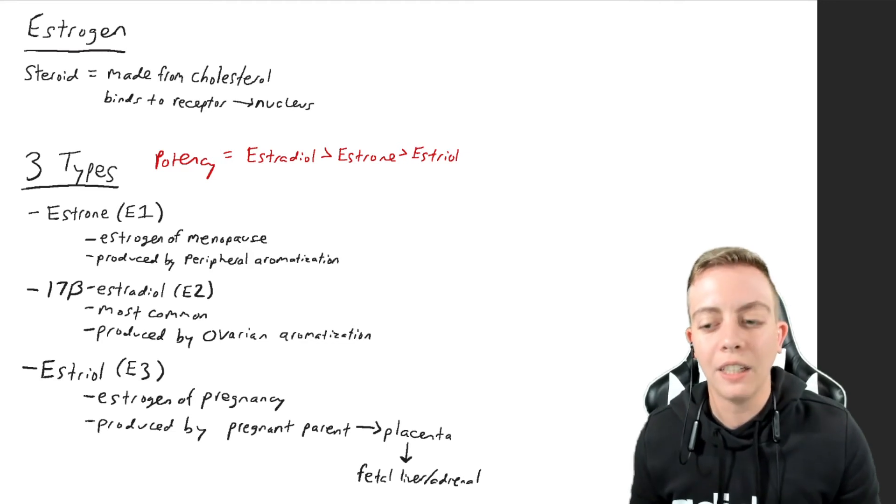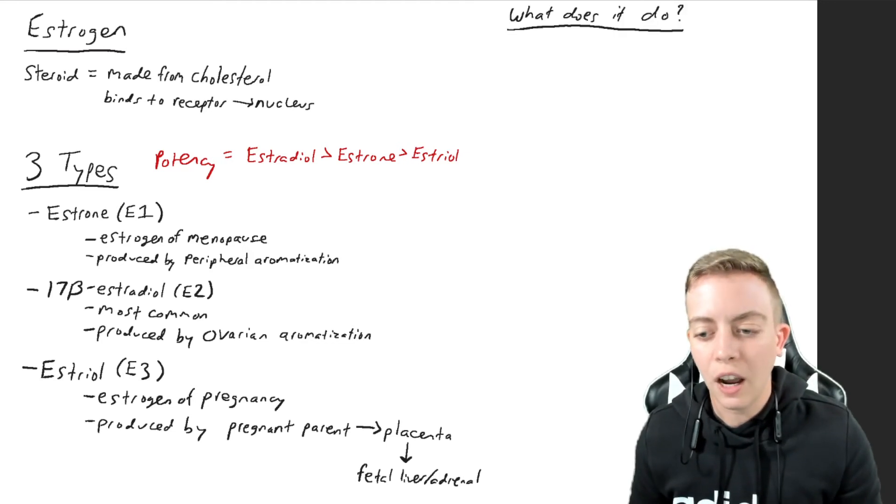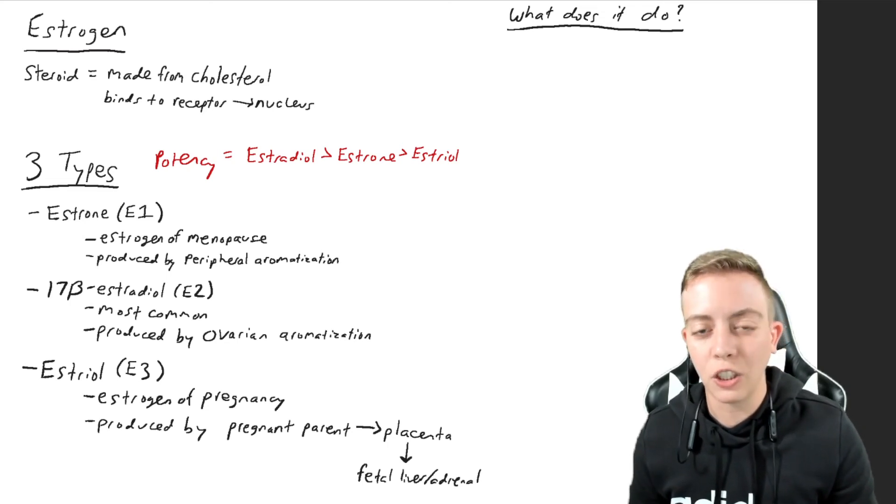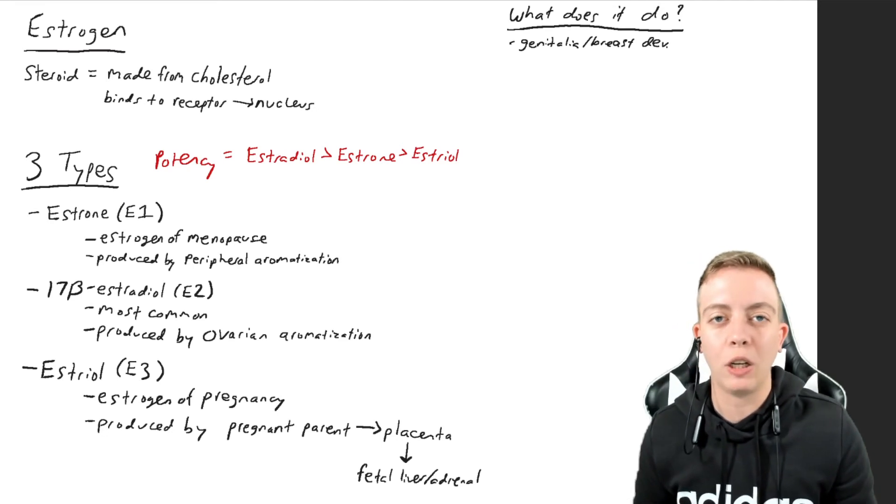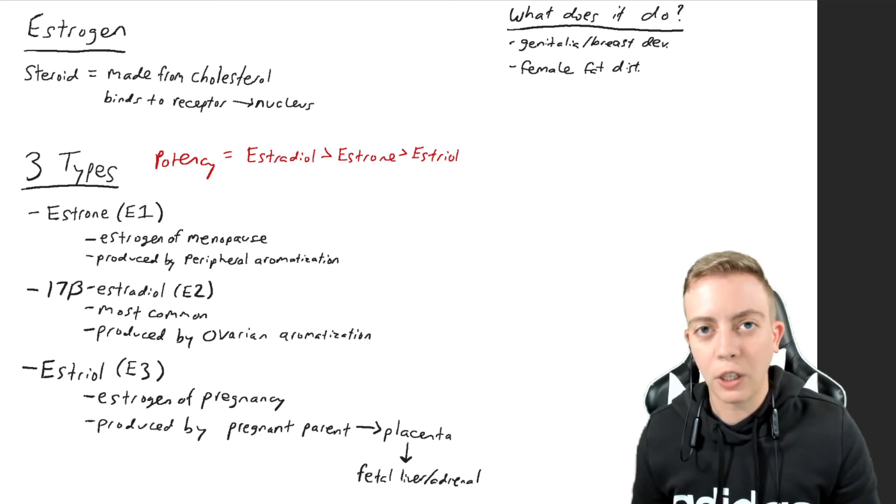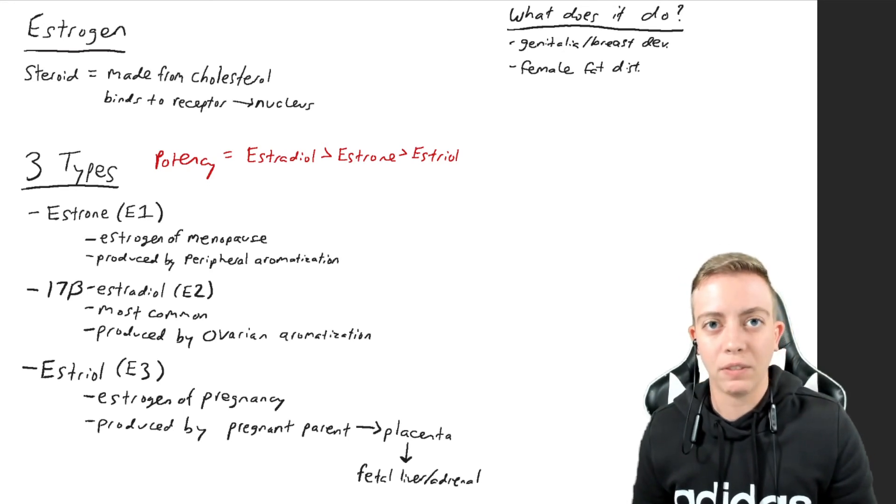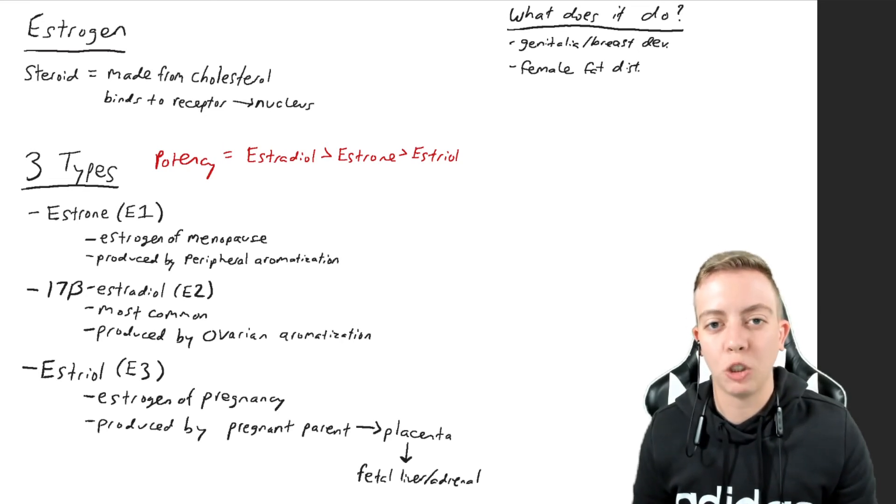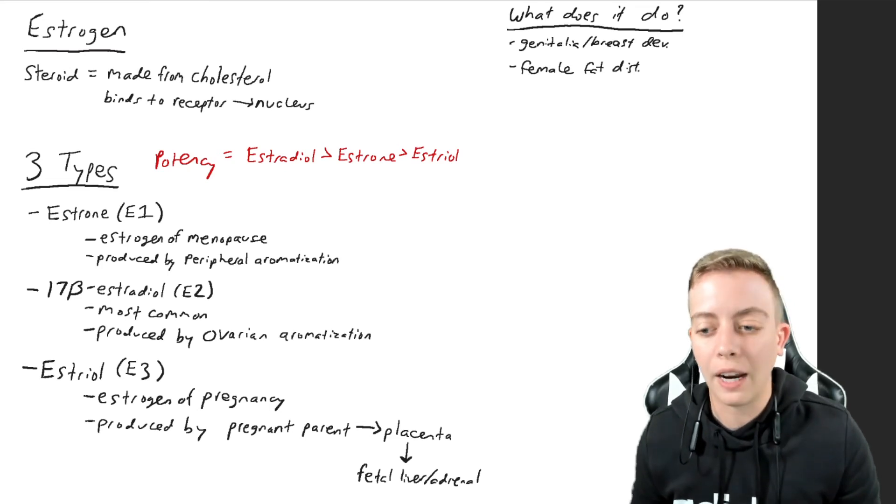So what exactly does estrogen do? It has lots of different functions. You may remember from my differences in sexual development videos about embryology, it is responsible for the development of female genitalia and breast development. It is also responsible for female fat distribution, so a lot of more subcutaneous fat found around the hips and in the breast tissue.